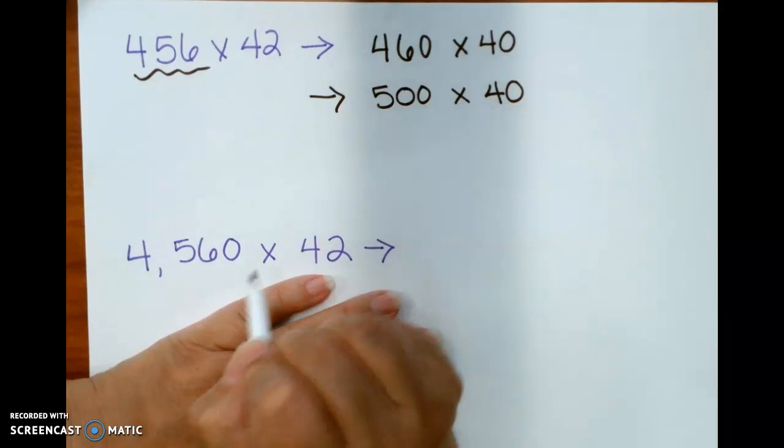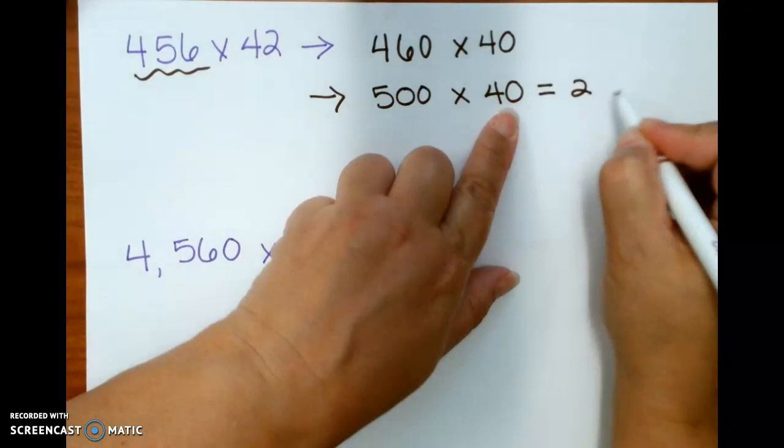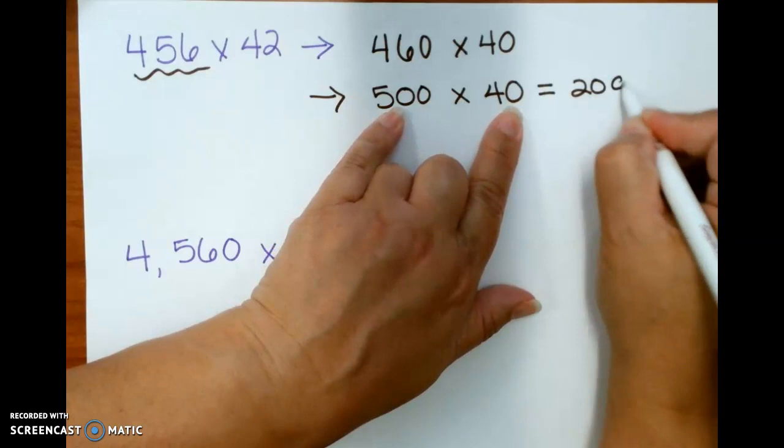And that would give me 5 times 40, which is 5 times 4, which is 20, and then 100 times 10 is 1,000. So that gives me 20,000.